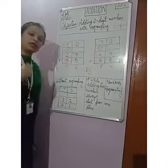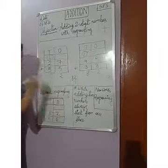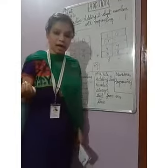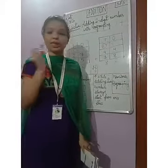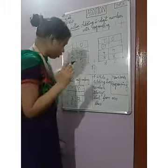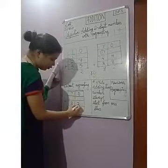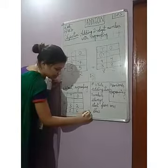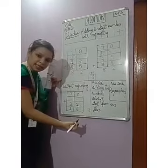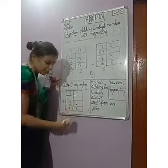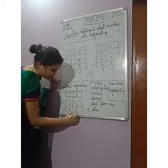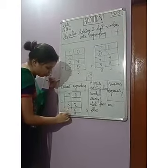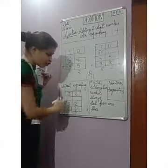Now there is another word: without regrouping. Without regrouping means there is no carryover. For example, 2 and 6 — the answer is 8. It is a single digit, only the 1's place, so we put 8 here — no carryover. And 3 plus 1 is 4. So the answer is 48.